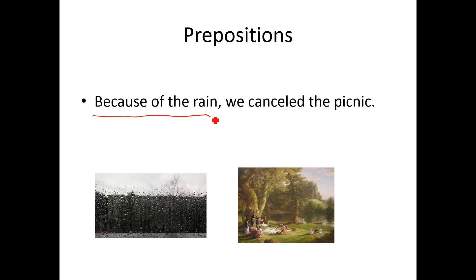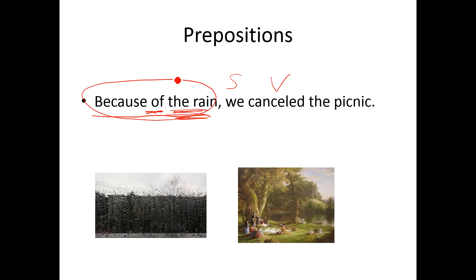Because of the rain, we canceled the picnic. In this situation, 'because of' is the preposition, and it's followed by a noun or the object — 'because of the rain' — and then in the sentence, I have a subject and a verb. I can also put the prepositional phrase at the end: we canceled the picnic because of the rain.